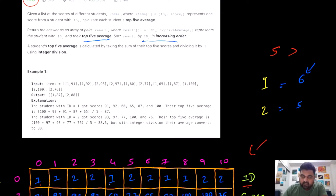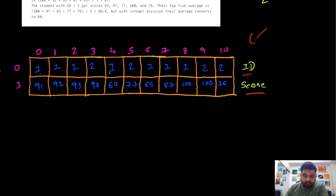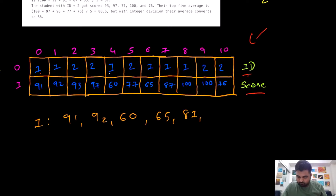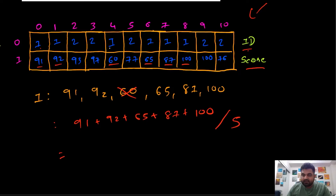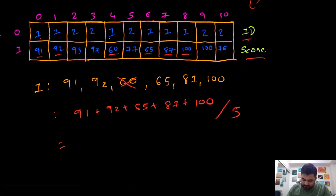Our aim is to calculate the average of the top five subjects. We need to build a two-dimensional array in the result and return it for every single ID. So for ID number one and ID number two, we return the average found for the top five subjects, returned in increasing order based on the given ID. Since we are given six scores for student ID one, we only choose the top five — not the score of 60, which is the lowest. We sum the remaining five scores and divide by five, giving an average of 87.